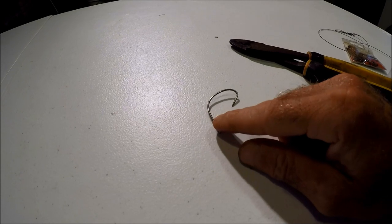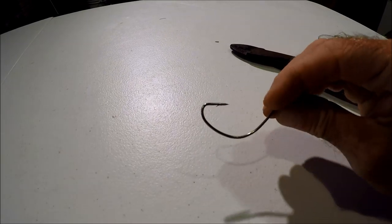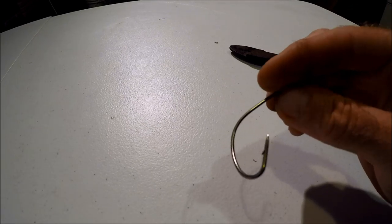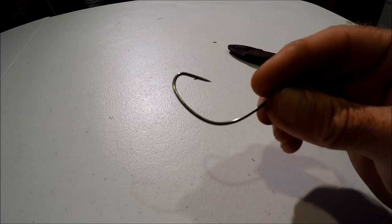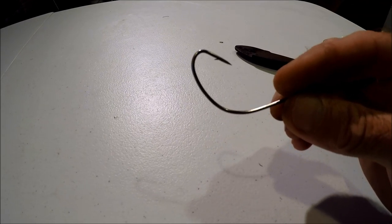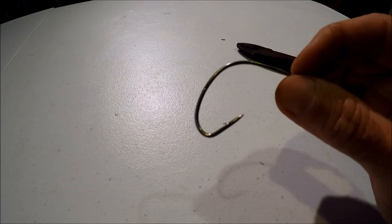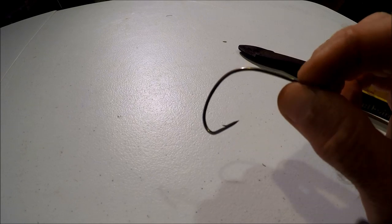You can't forget these. You need a hook. Now I'm using size six kahles, one of my favorite style of hook for alligator gar. You can go a little bigger if you want. I like a size six. It's perfect for the bait that we're going to use later on in the session that we're making these for.